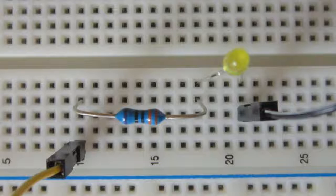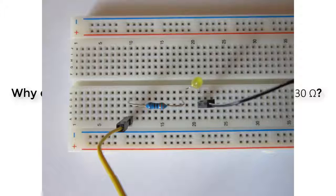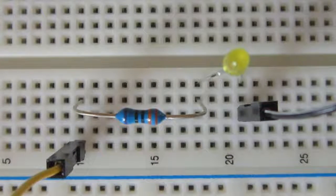Some of you might ask, why do we need a resistor? GPIO pin 7 outputs 3.3V. If we use an LED with a voltage of 2V and no resistor, the LED can be damaged. In this example, my LED can only handle an amperage of 4mA.